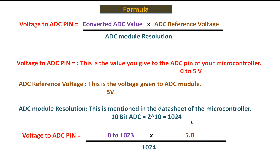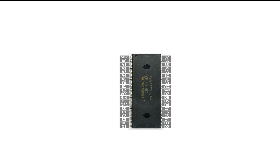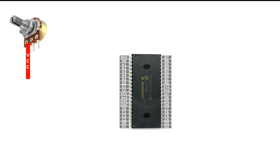Now let me introduce you to the hardware — the connections and how we connect it to the pin. First of all, this is our 3-pin potentiometer; I am going to use the 10 kilohm potentiometer. You can use other values as well depending on availability. Let me label it: the leftmost pin is VCC, the center is the ADC output, and the right one is ground.